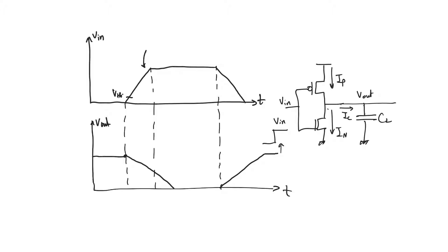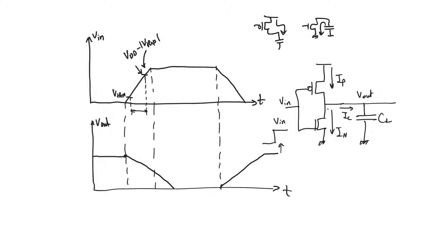Above V_threshold_N, the input causes the NMOS transistor to be on. Below V_DD minus |V_threshold_P|, the input voltage allows the PMOS to be on. So for this range of time, both transistors are on. Why did this not happen before? When we looked at the CMOS inverter previously — whether calculating V_output_high, V_output_low, or delay — we never assumed two transistors were on at the same time. We only drew either the PMOS charging or the NMOS discharging the capacitor.